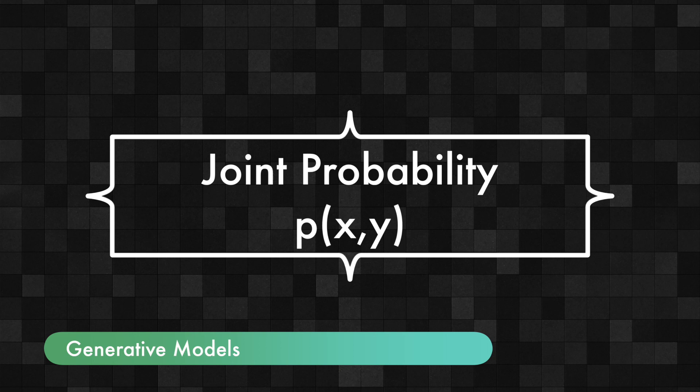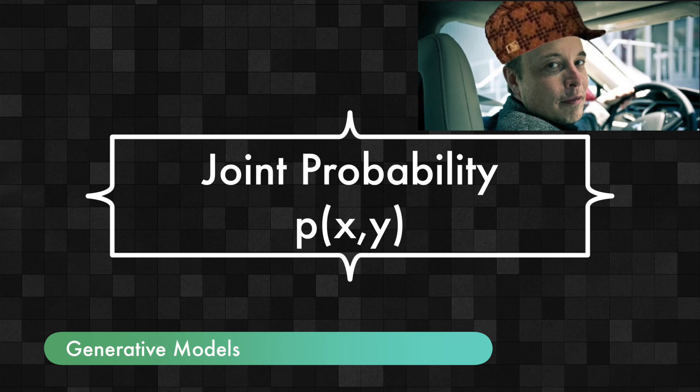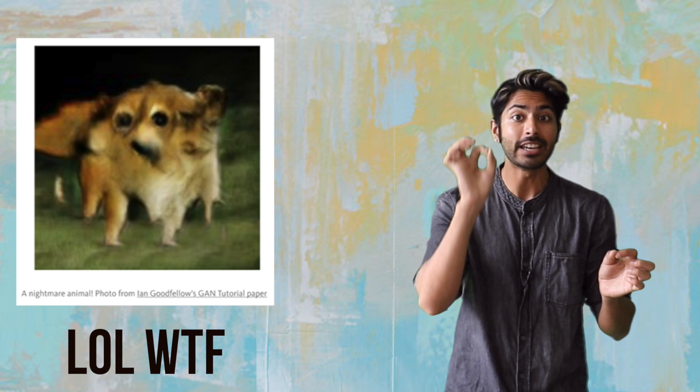Generative models instead estimate a function called the joint probability — the probability of y and x — that is, the probability that x is an image and there is a Tesla in it at the same time. The reason we estimate the joint probability for generative models is because using it we can generate images of Teslas by sampling car types y and new images x from the probability of y and x.